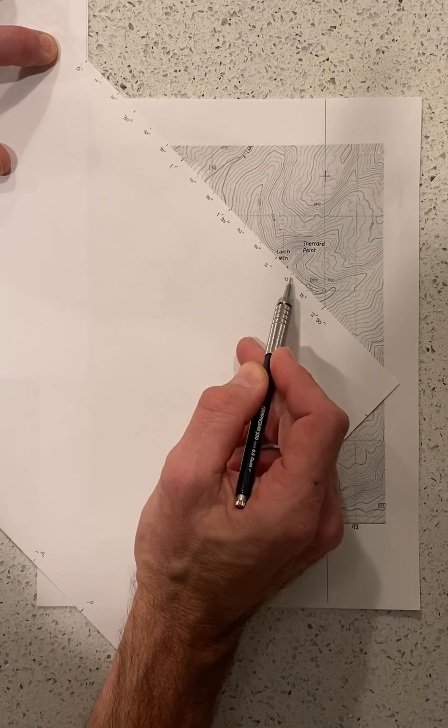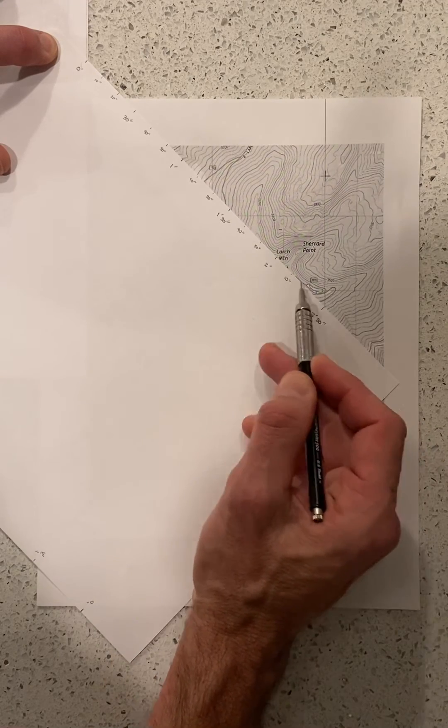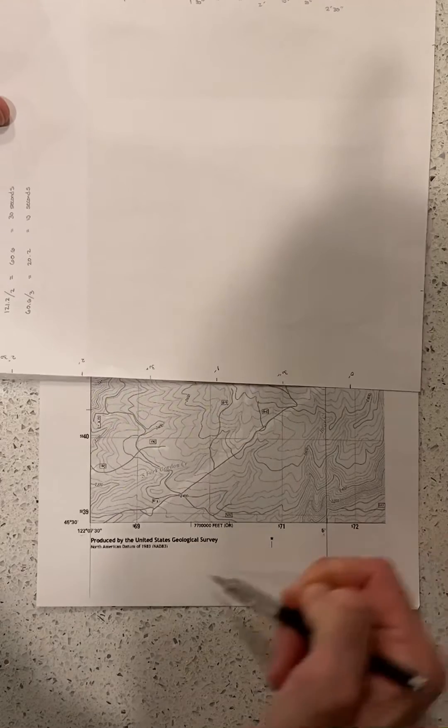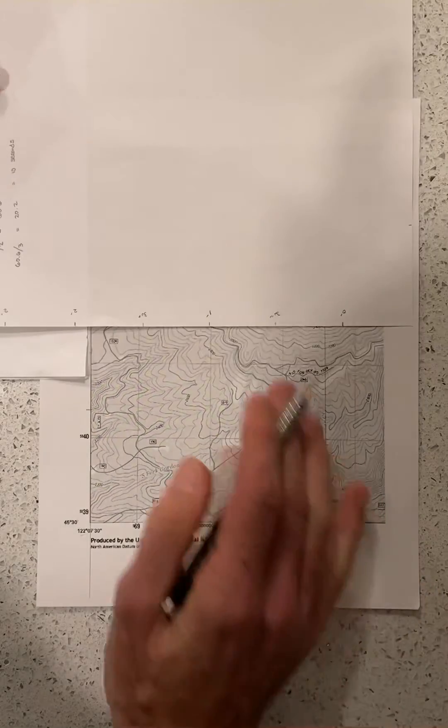So here we would see 10, 20, maybe about 23 seconds beyond the six line of longitude, so we would see 122 degrees, six minutes, 23 seconds or so.